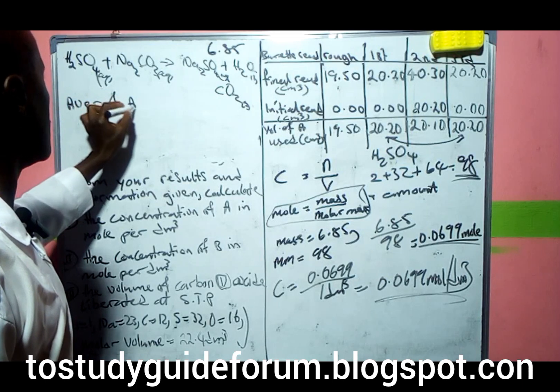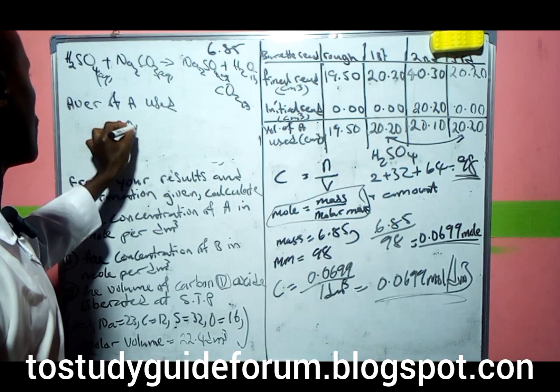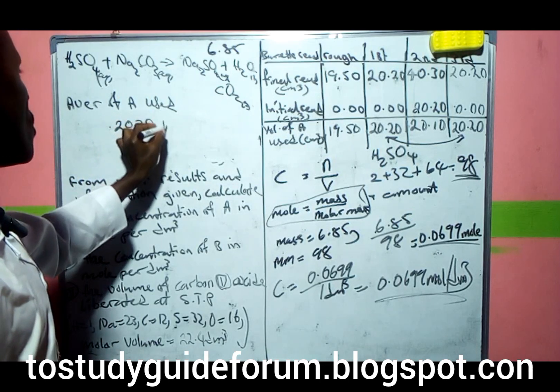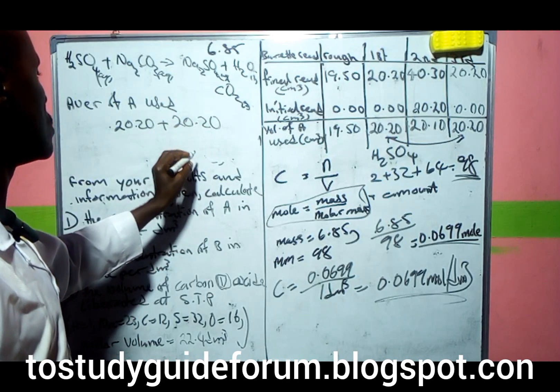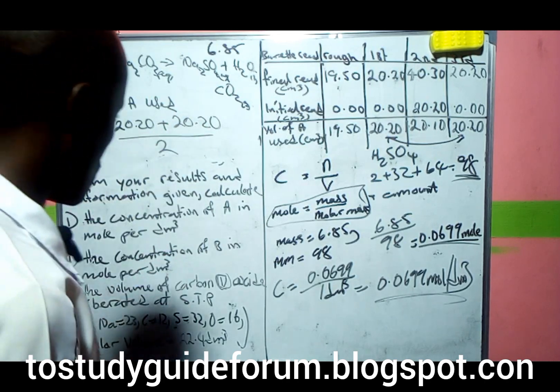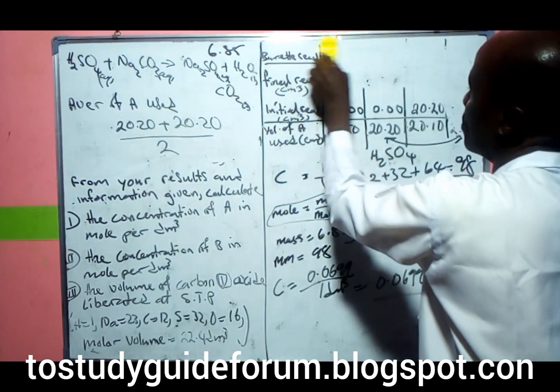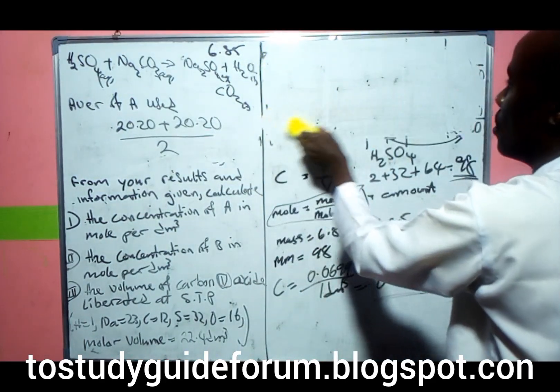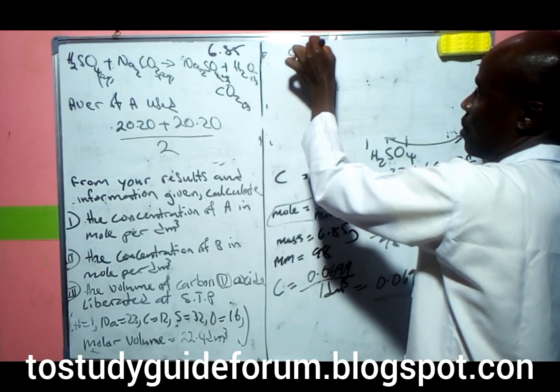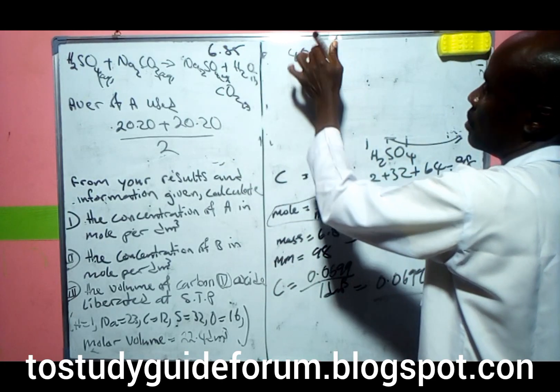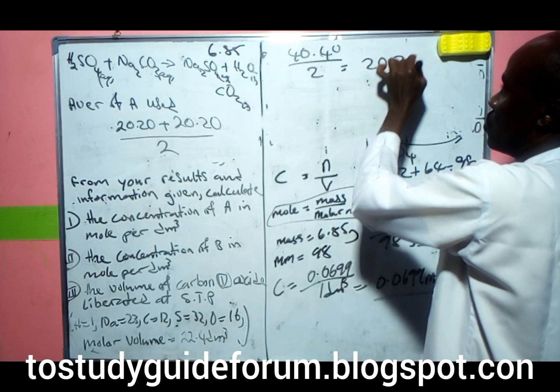20.20 plus 20.20 all over 2. When we add them, we have 40.4 divided by 2, which equals 20.20 cm³.